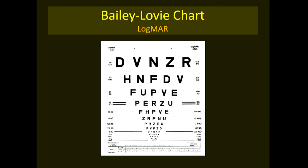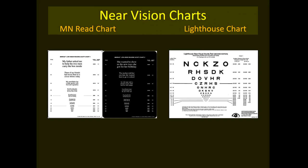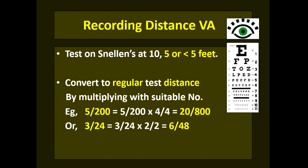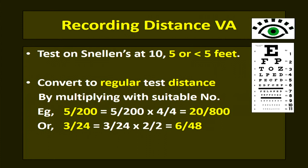In our clinic, we use the regular Snellen chart at smaller distances like 10, 5, or even 3 feet instead of 20 feet. Once vision is recorded at a smaller distance, it can be converted to the regular 20-foot or 6-meter testing distance by multiplying by a suitable number. For instance, testing at 5 feet where the patient reads only the top line gives a vision of 5/200, which multiplied by 4/4 equals 20/800. In British notation, if vision at 3 meters is 3/24, multiplying by 2/2 gives 6/48.